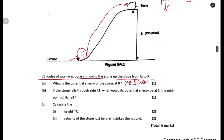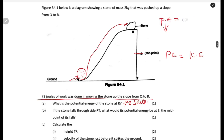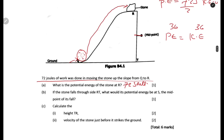If the stone falls through R to T, what would its potential energy be at S, which is halfway through the falling? Remember the previous explanation: on top, all energy is potential energy — 72 joules — and kinetic energy equals zero. Halfway through the fall, divide by two. Potential energy at S is 36 joules.